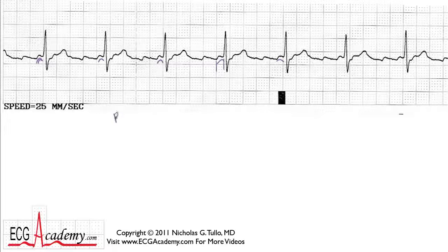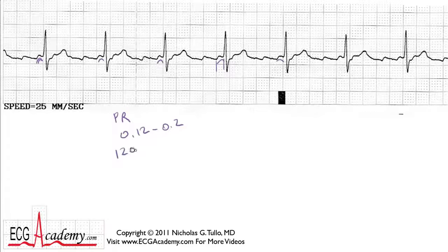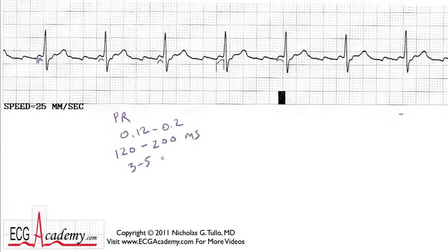What's the normal PR interval? The normal PR should be 0.12 to 0.2 seconds — or as electrophysiologists like to think in milliseconds, 120 to 200 milliseconds. For beginners, it's basically anywhere from three to five small boxes. That would be the normal PR interval. This really does look short — it's almost like two and a half small boxes, really not quite three.